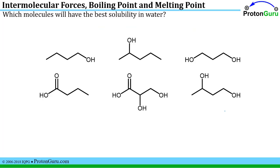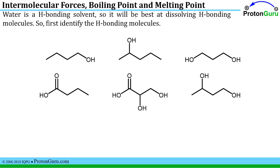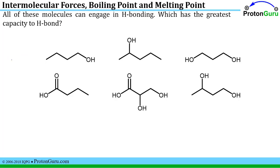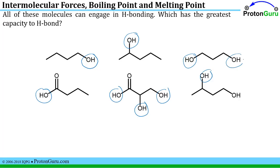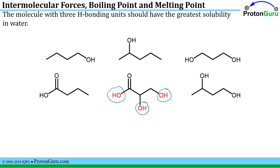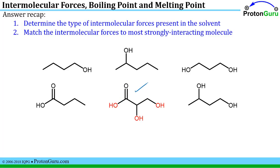Another application of intermolecular forces is identifying solubility of molecules in different solvents. This question asks which molecule has the best solubility in water. We have to think about what type of intermolecular forces are present in water. Water is a hydrogen bonding solvent because it has very polar OH bonds as hydrogen bond donors, so it interacts strongly with molecules capable of hydrogen bonding. All of these molecules can hydrogen bond because they all have OH units. The question is which has the greatest capacity to hydrogen bond per molecule — assessed by counting OH or hydrogen bond donor units. The molecule with three units has the greatest capacity and is the most soluble in water.